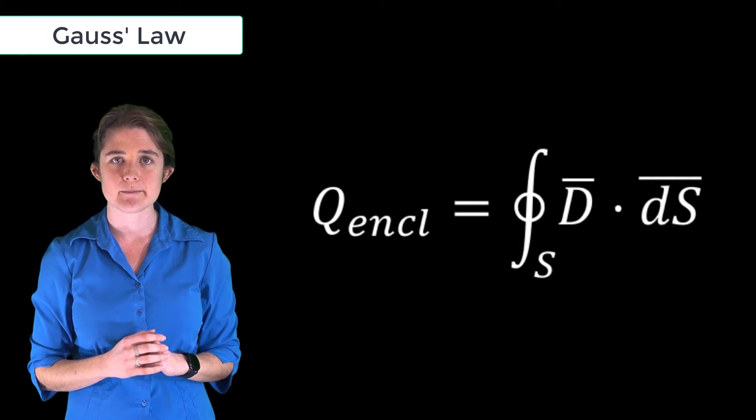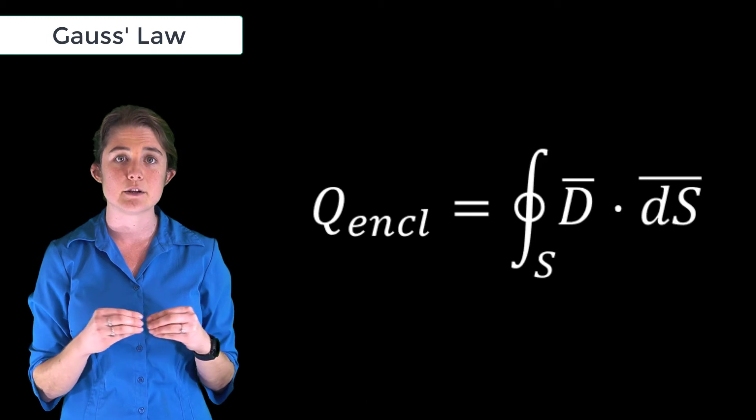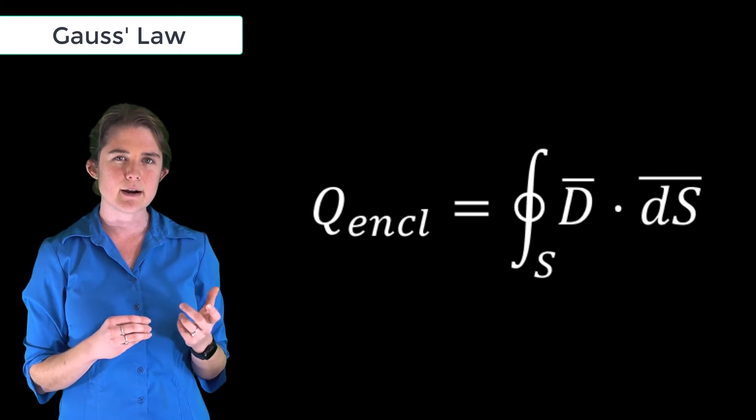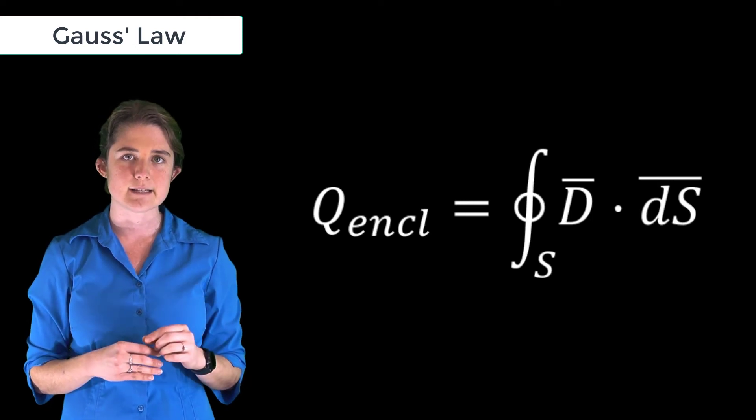This is the equation for Gauss's Law. The quantity on the left is Q_enclosed, the charge that exists inside the closed surface. On the right, you have the integral over the closed surface of the electric flux density going through the surface, indicated by D dot dS.